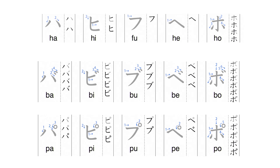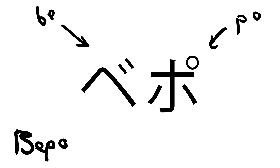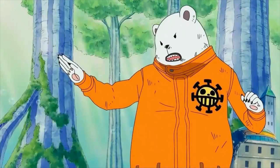Then we have the H column, which is one of the most special ones because it can have three sounds from one character. Normally it's Ha, Hi, Fu, He, Ho, but with the Dakuten it becomes Ba, Bi, Bu, Be, Bo. With the Handakuten — the little circle — it becomes Pa, Pi, Pu, Pe, Po. With that alone you can already make a word, for example 'Pepo,' which is a character from the anime One Piece — basically a talking bear that can fight. Pretty rad!